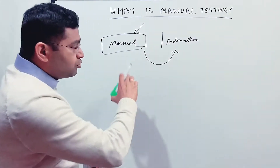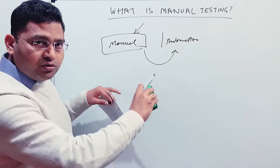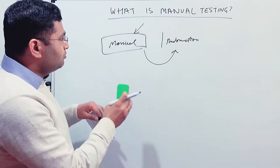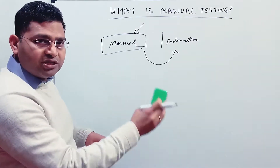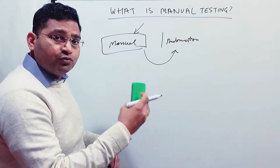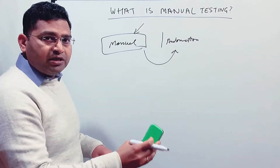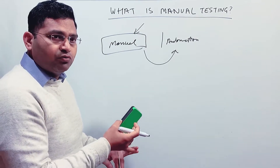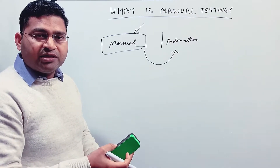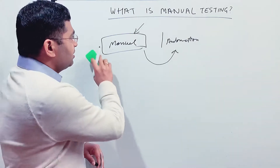So these are two broader categories in software testing: manual is the testing that you do manually, and automation is the testing that you do with the help of tools. For example, if you are trying to automate a web application, you can use Selenium, which is very widely used.